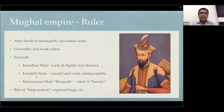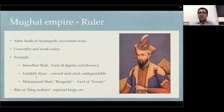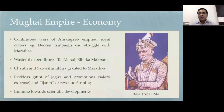For example, there were the Sayyid Brothers in the Mughal Empire who became so powerful that they even killed Farrukh Siyar. So you can imagine what kind of impact weak rulers can have on any empire. This is the first factor which led to the decline of the Mughal Empire — unworthy rulers.